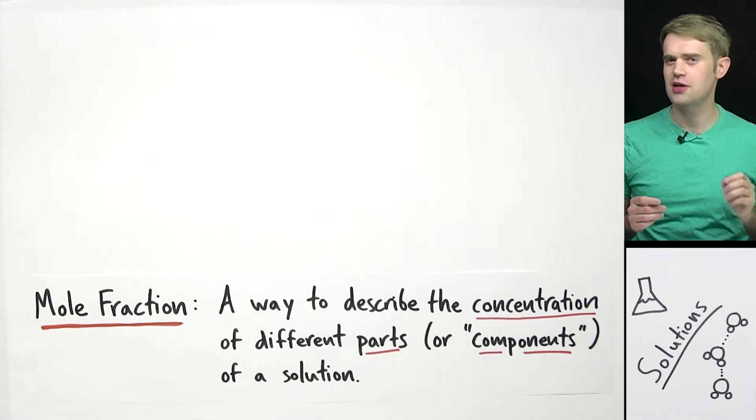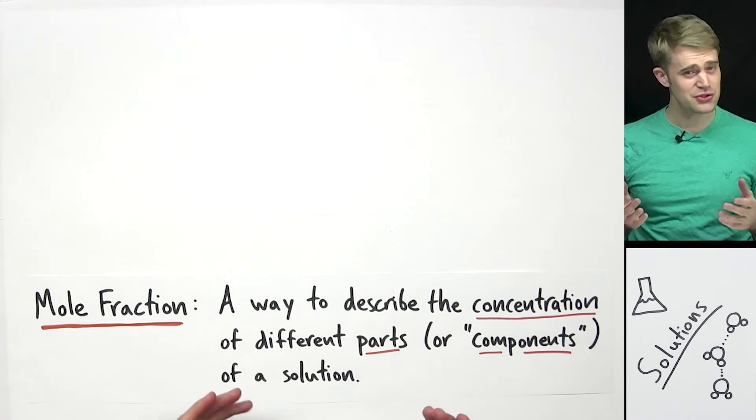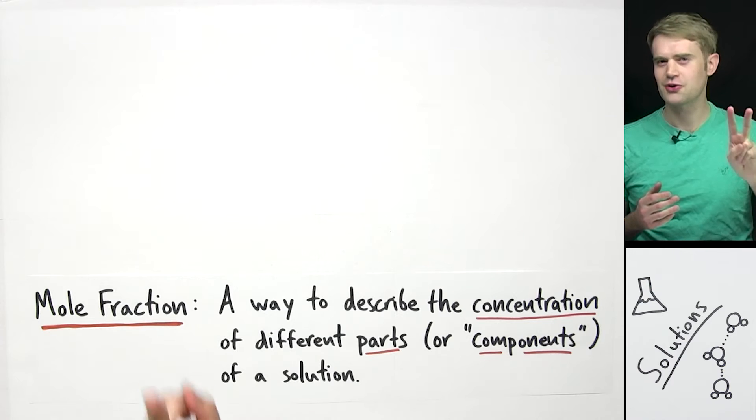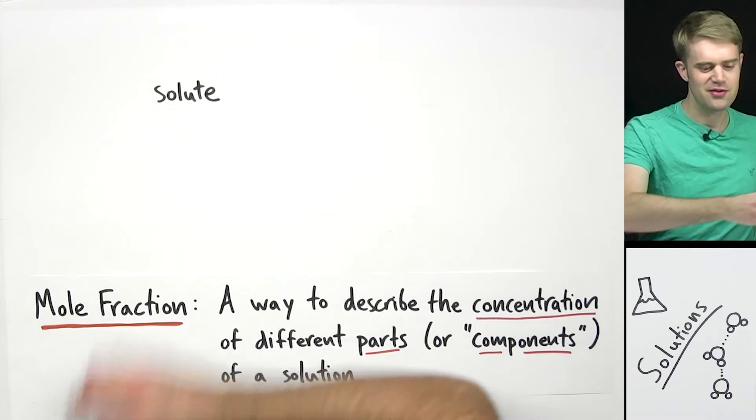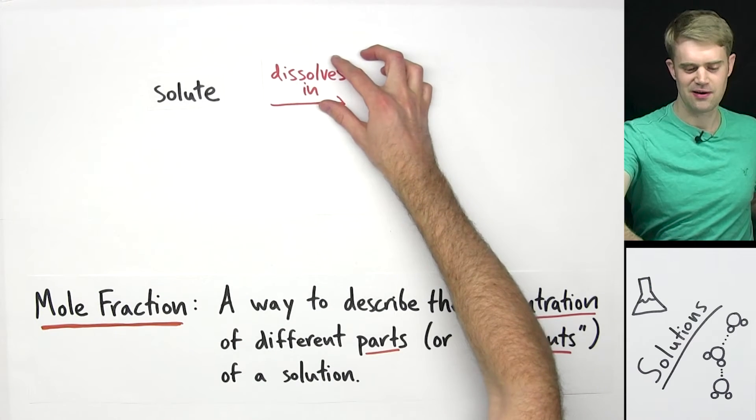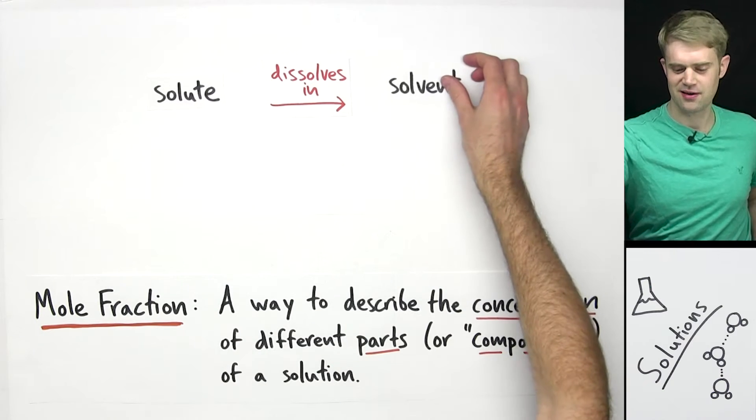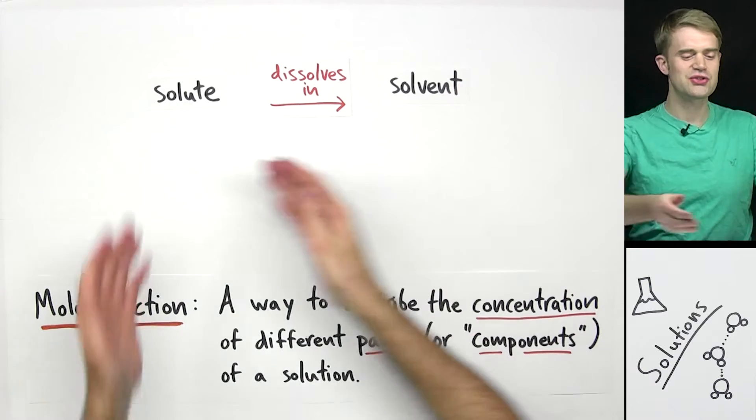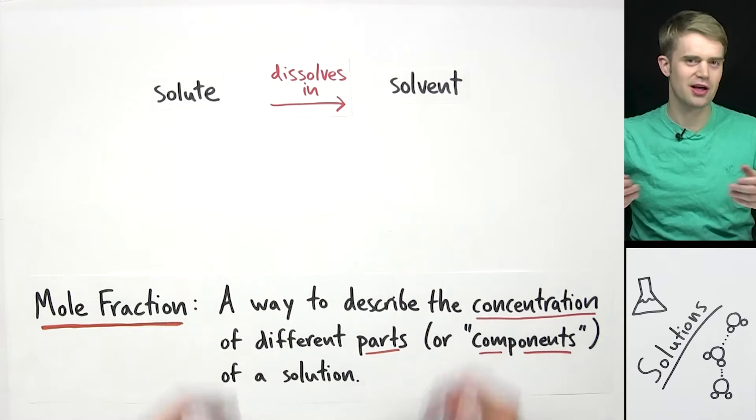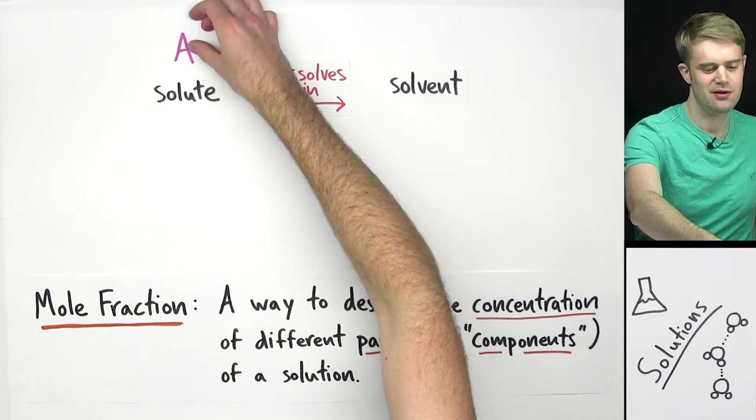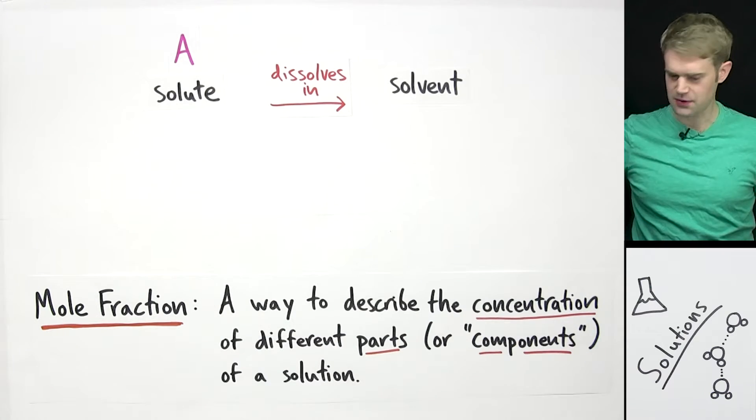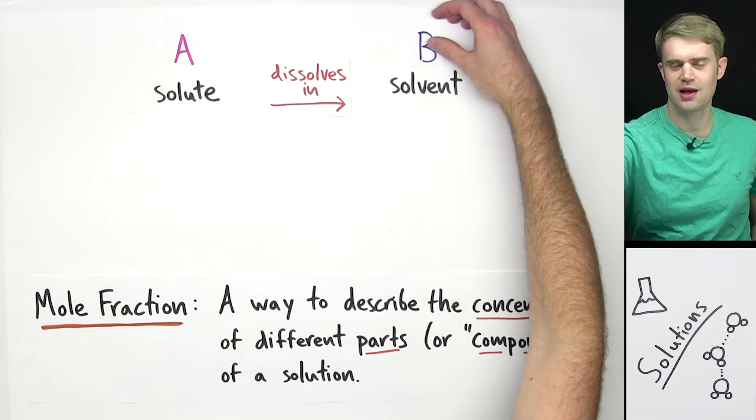Let's take a look at an example solution. Most solutions have two parts or components. They have a solute that dissolves in a solvent. The solute and solvent are different chemicals. In this example, we'll say that the solute is chemical A and the solvent is chemical B.